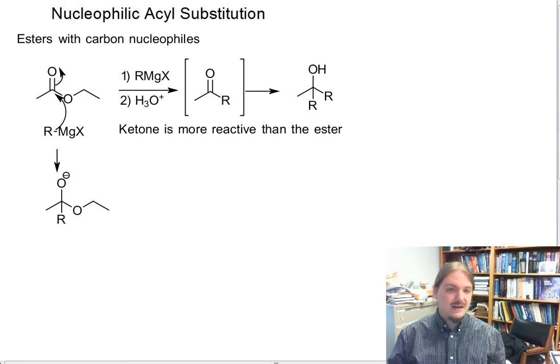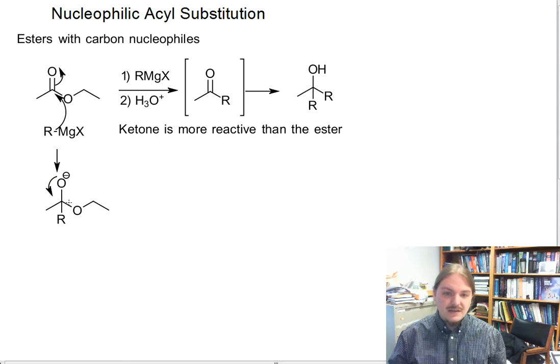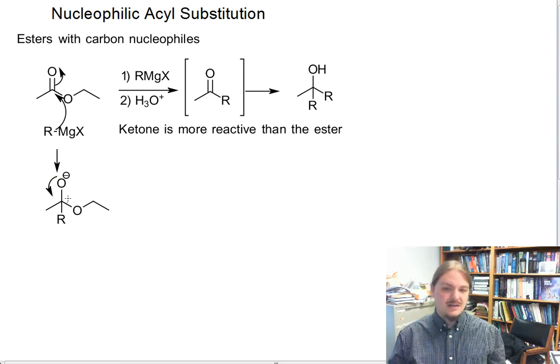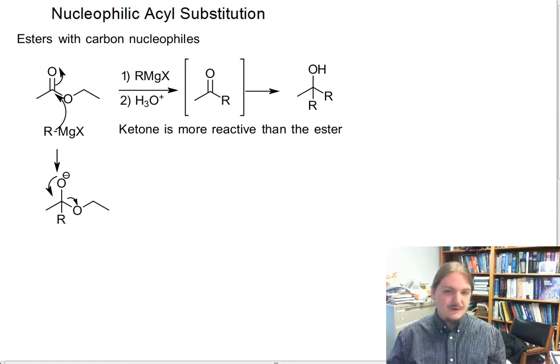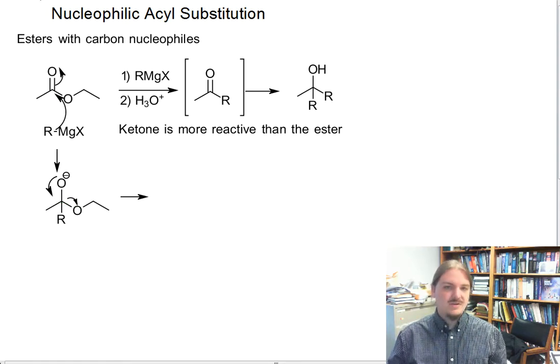We have a negatively charged tetrahedral intermediate followed by loss of leaving group. The alkoxide leaving group goes to generate the ketone.